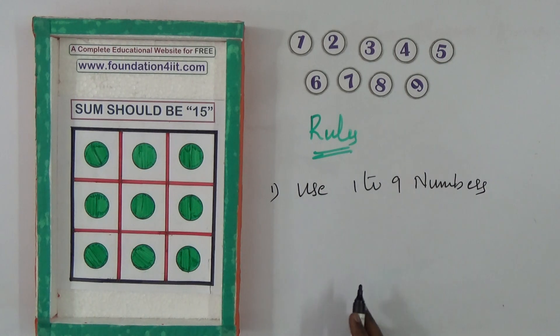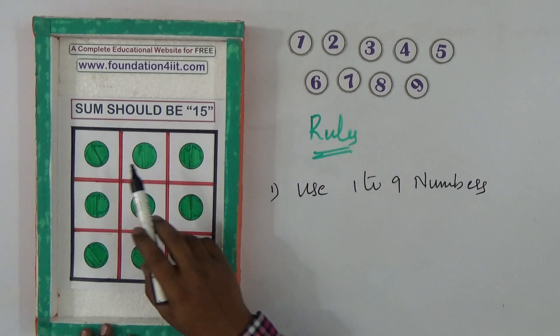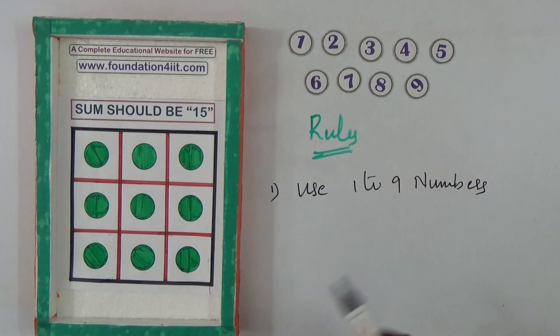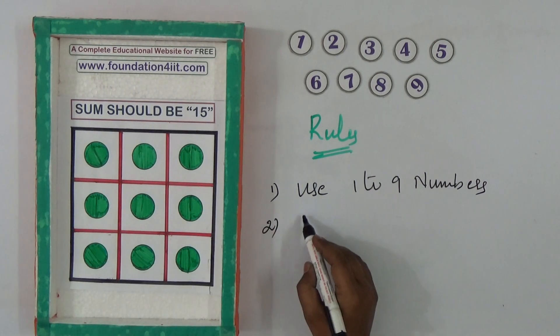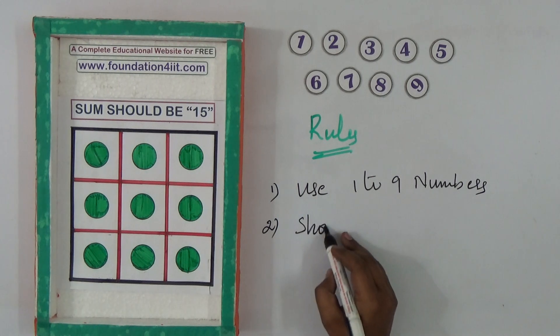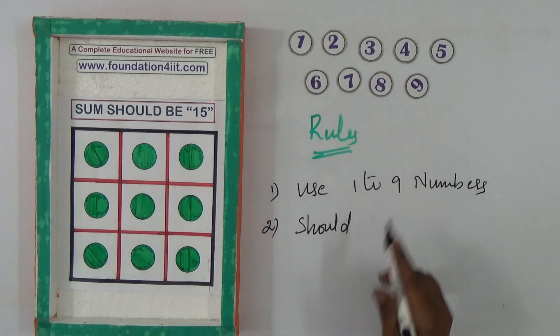The main thing is sum should be 15, so every row, every column. Second rule, should not repeat because I am giving only these nine coins.